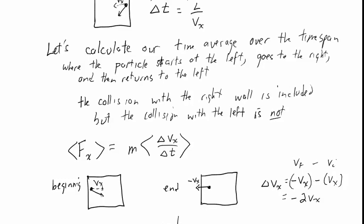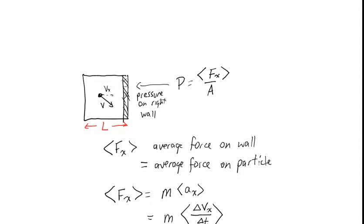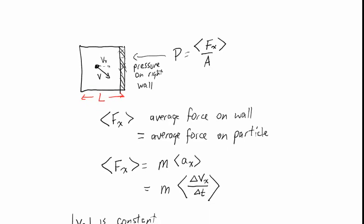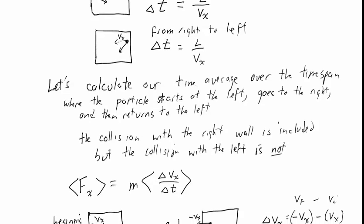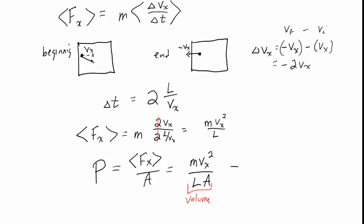The average force equals m times 2vx divided by 2L over Vx. The twos cancel and the vx in the denominator multiplies up top, giving us m vx squared over L. Combining this with the pressure formula — pressure equals average force divided by area — the pressure on the right-hand wall equals m vx squared over L times A. And since L times A is simply the volume, the pressure equals m vx squared over the volume.